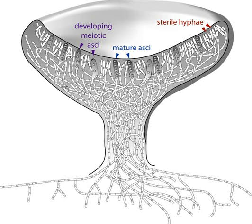An Apothecium is a wide, open, saucer-shaped or cup-shaped fruit body. It is sessile and fleshy. The structure of the apothecium chiefly consists of three parts: hymenium (upper concave surface), hypothecium, and excipulum. The ASCI are present in the hymenium layer and are freely exposed at maturity. An example are the members of Discomycetes. Here the fertile layer is free, so that many spores can be dispersed simultaneously.